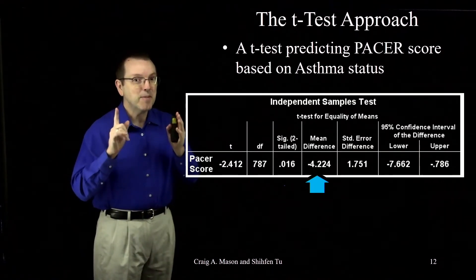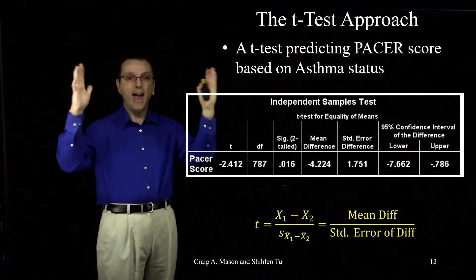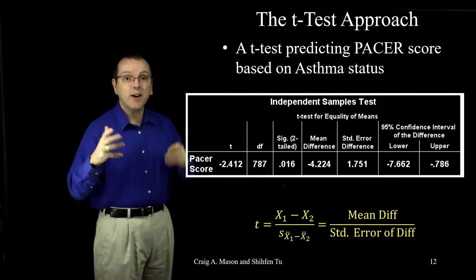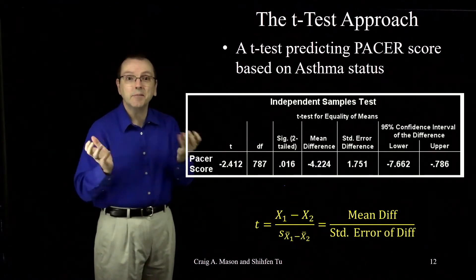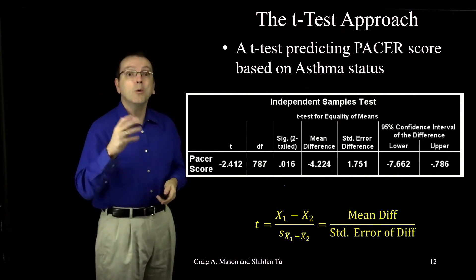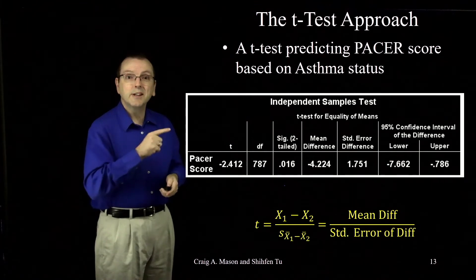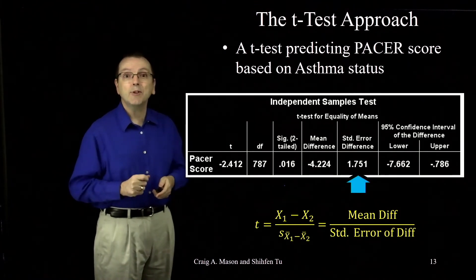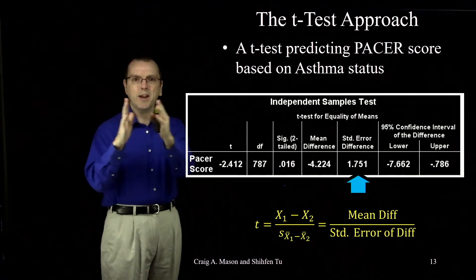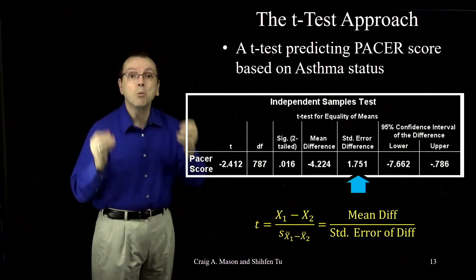Flashback. Remember, that's the numerator in our t-test, that how big of a difference did I see part. But as we know, there will be some random difference in our sample means, even if the value really is the same in the population. We therefore use the standard error of the difference as our measuring stick for evaluating just how large that observed mean difference really is.